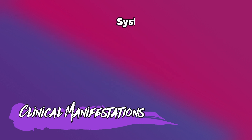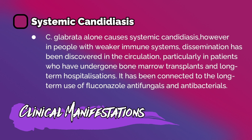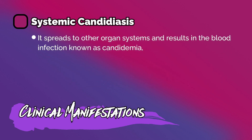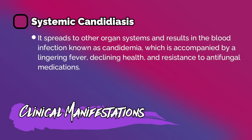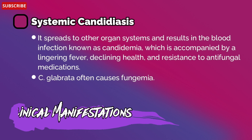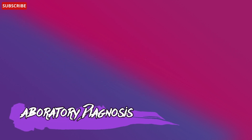Next is systemic candidiasis. Candida glabrata alone causes systemic candidiasis; however, in people with weaker immune systems, dissemination has been discovered in the circulation, particularly in patients who have undergone bone marrow transplantation and long-term hospitalization. It has been connected to long-term use of fluconazole, antifungals, and antibacterials. It spreads to other organ systems and results in the blood infection known as candidemia, accompanied by lingering fever, declining health, and resistance to antifungal medications. Candida glabrata often causes fungemia.